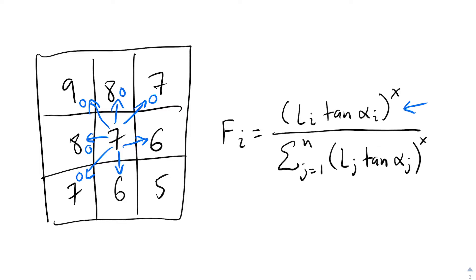In the equation, Li is 1 half for the adjacent cells as we previously mentioned, and the tangent of alpha i is the slope, and thus 1. So, the flow towards the two cells is 1 half before normalization.